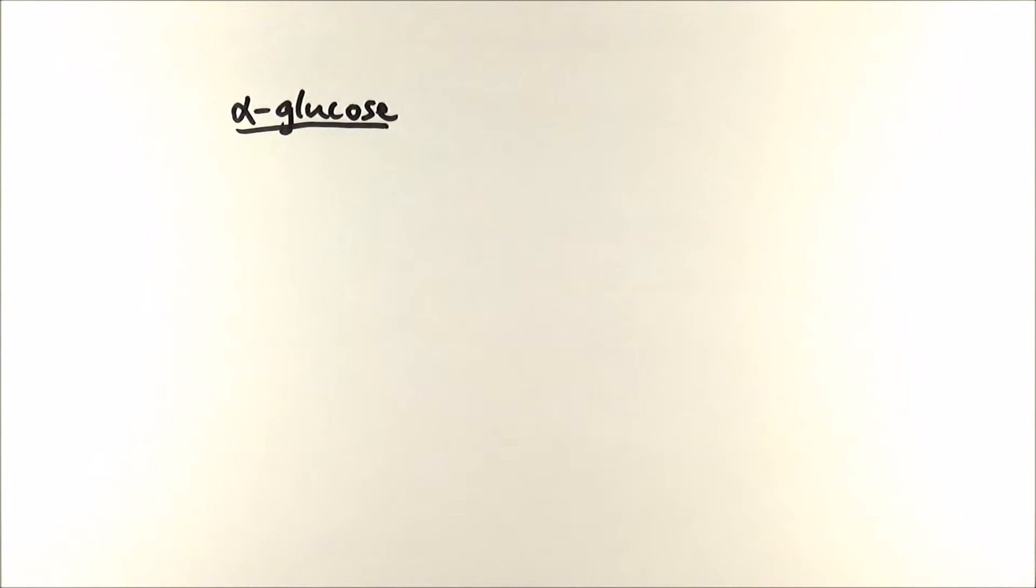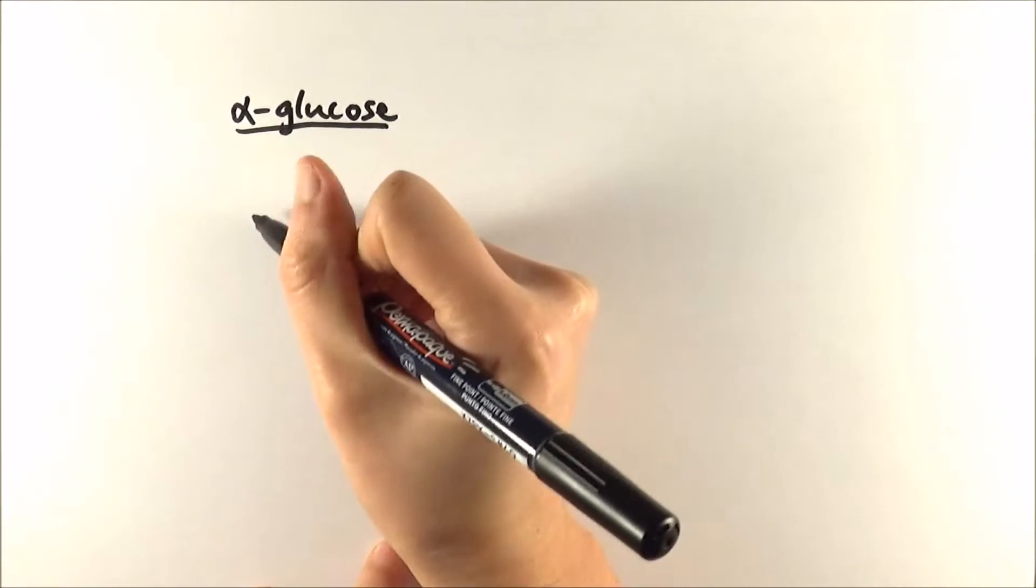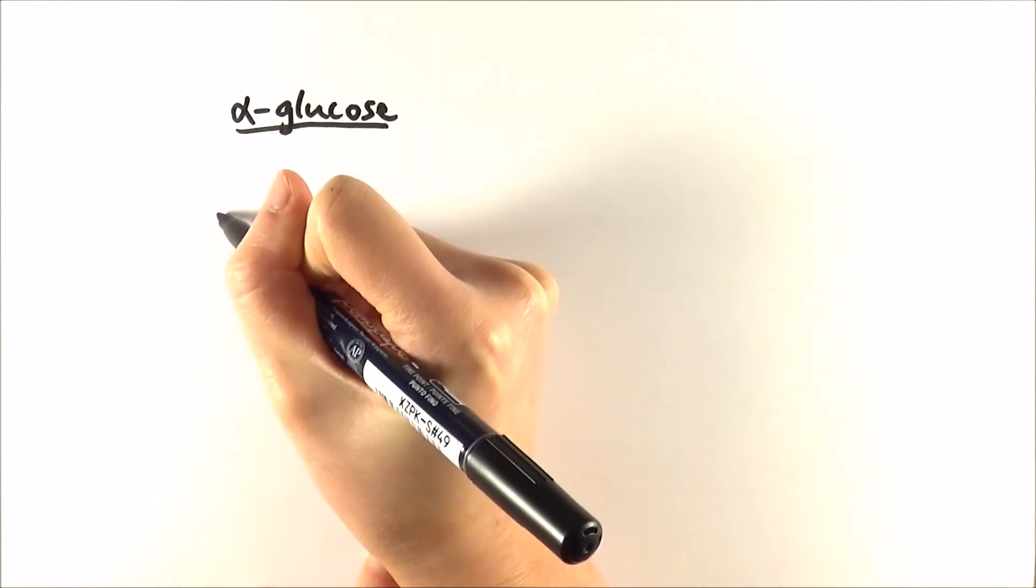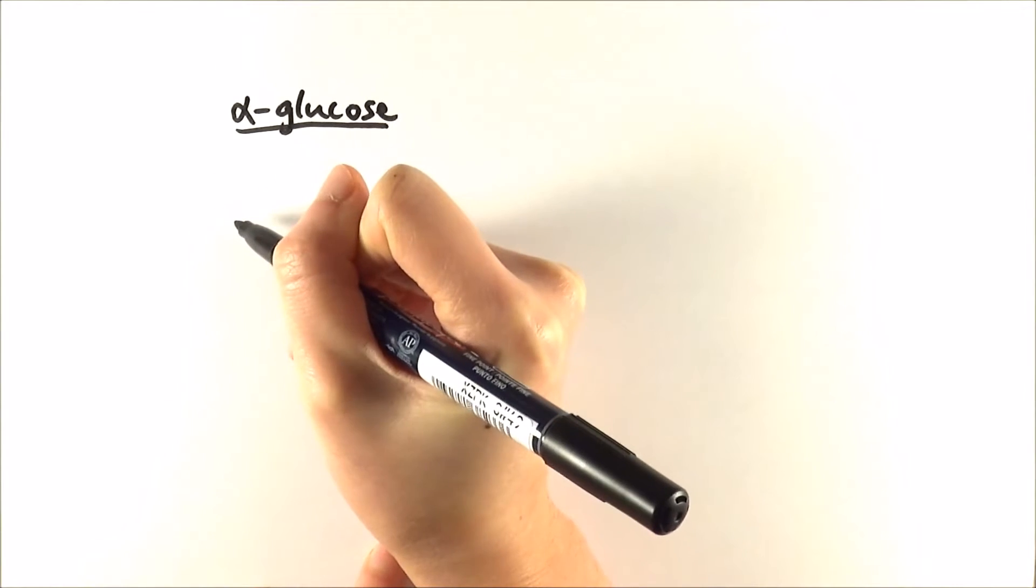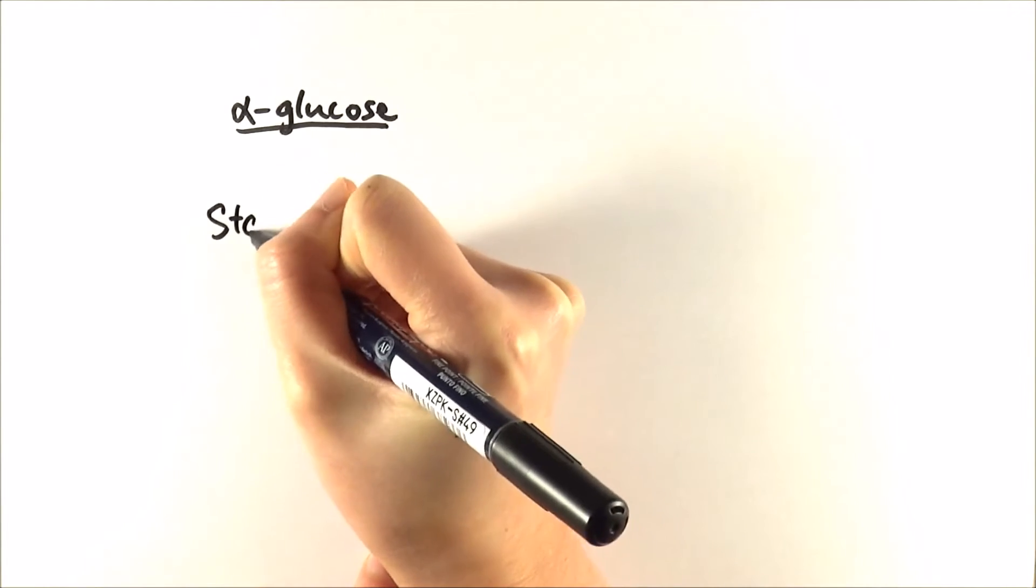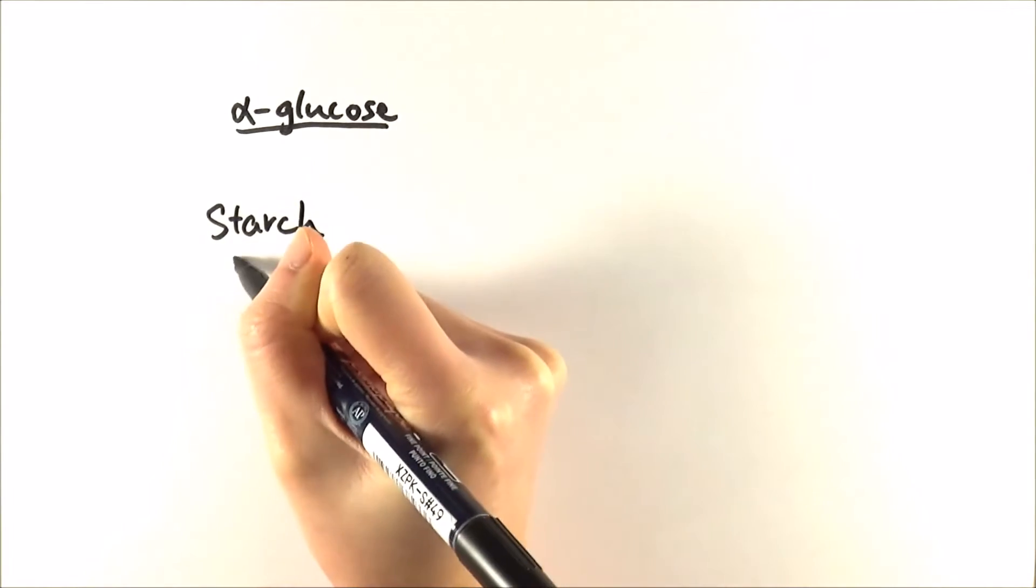There are two specific examples that you need to know, one in plants and one in animals. So we start off with the one in plants. Plants, as you would know from GCSE, they do photosynthesis to make glucose and the glucose then joins up to make starch and that is the first compound we'll think about.